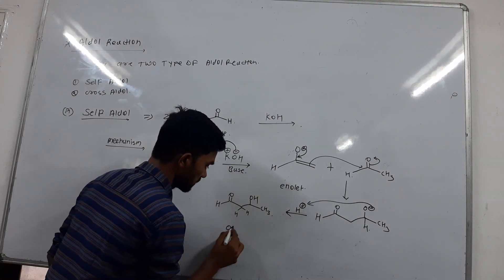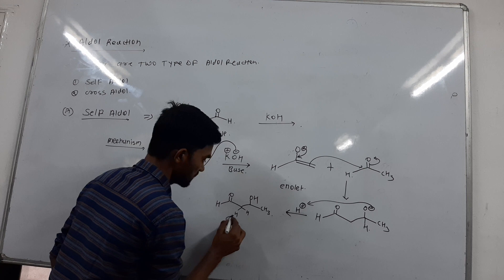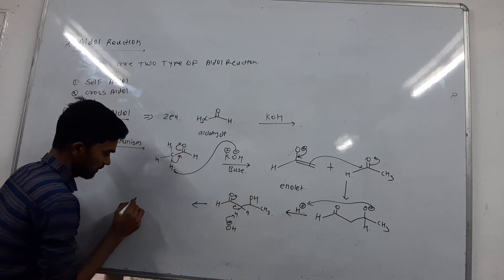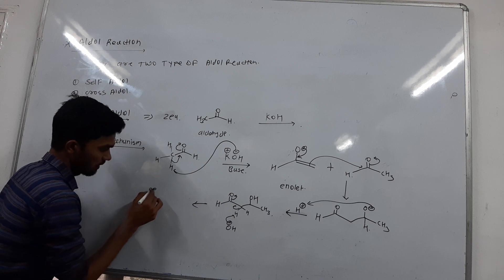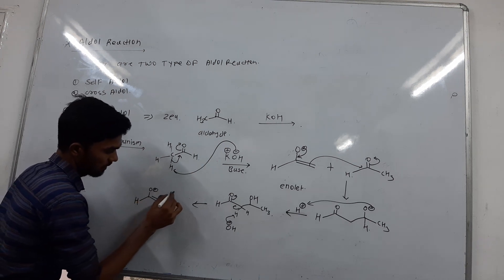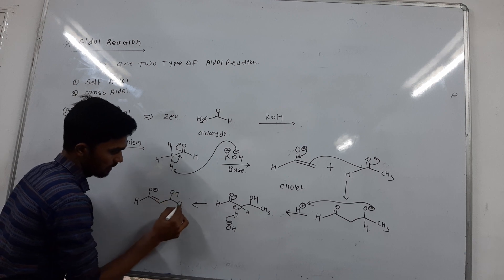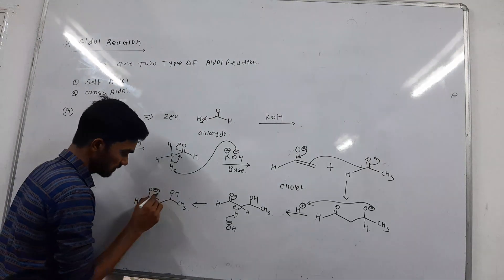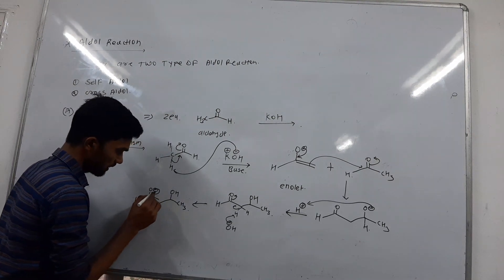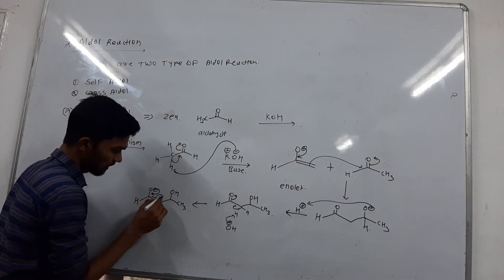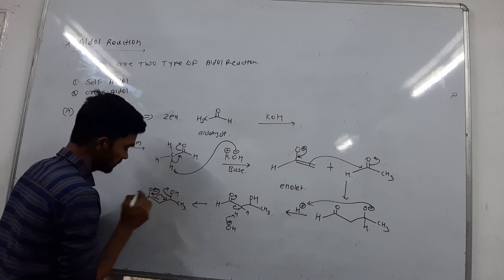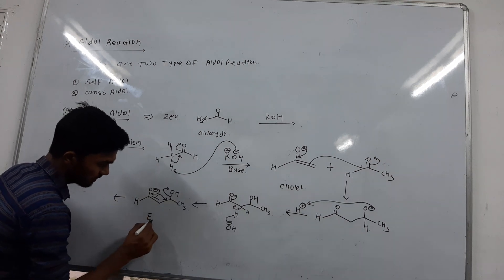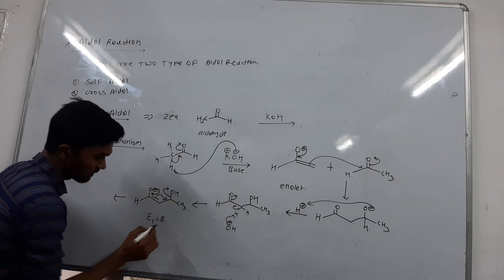Again, abstract the proton with the base. OH minus abstracts the proton and formation of enolate occurs. The next step involves this enolate: the bond breaks, OH minus is removed, and this reaction step is E1CB. This step is E1CB.